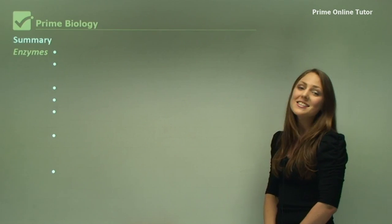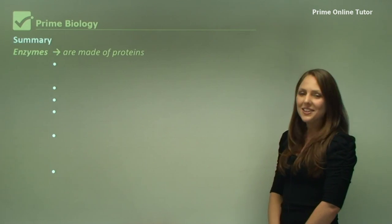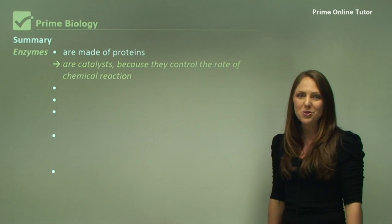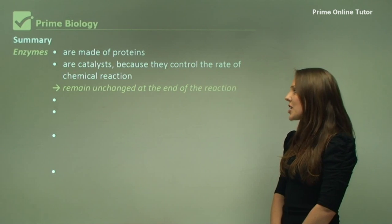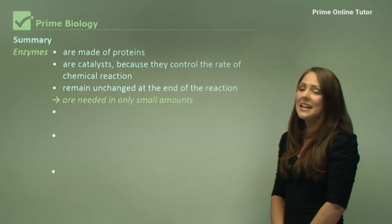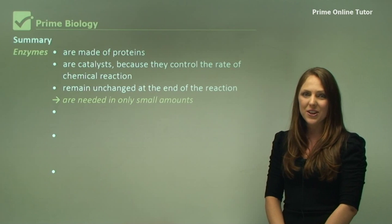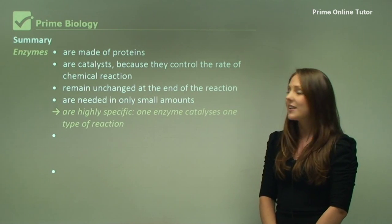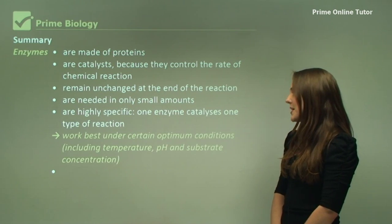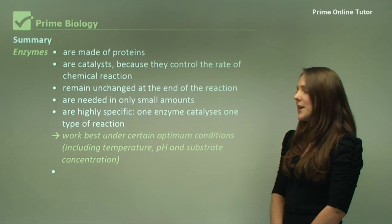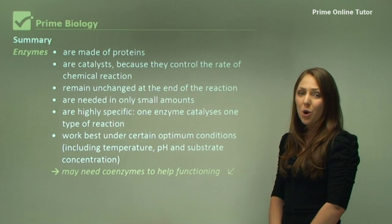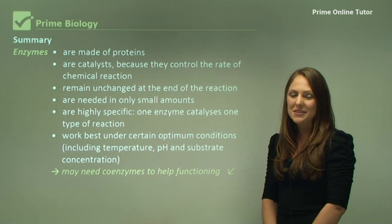A summary of enzymes: enzymes are made of proteins and are catalysts because they control the rate of chemical reactions. Enzymes remain unchanged at the end of the reaction, meaning they can be used again and again and are only needed in small amounts in cells. They are highly specific — one enzyme catalyses one type of reaction or substrate. They work best under certain optimum conditions including temperature, pH, and substrate concentration. They may need coenzymes or cofactors to help their functioning.